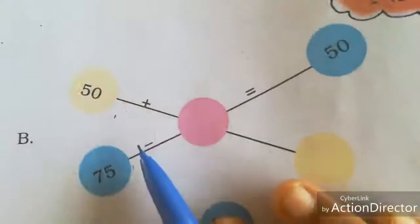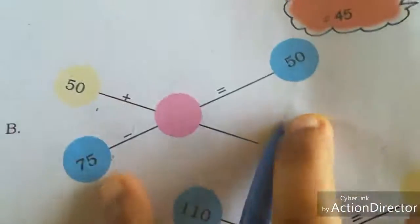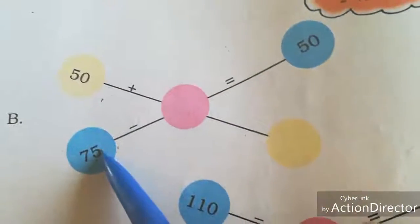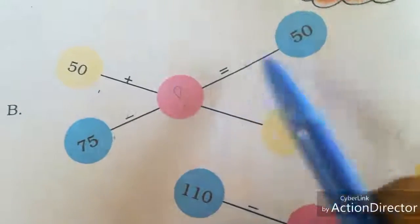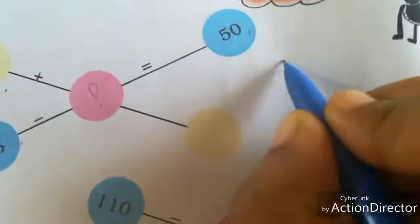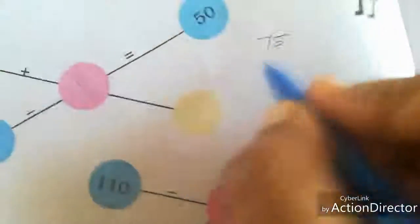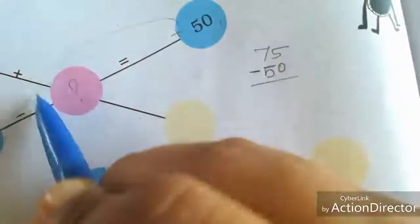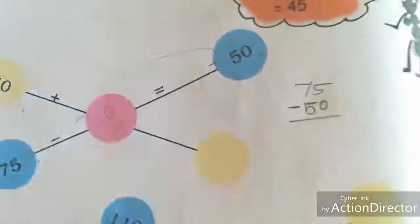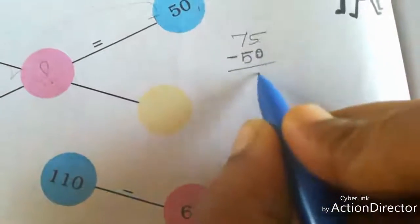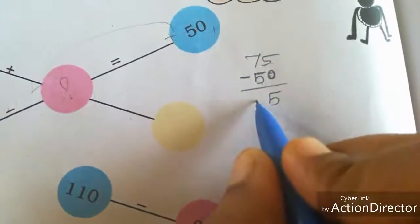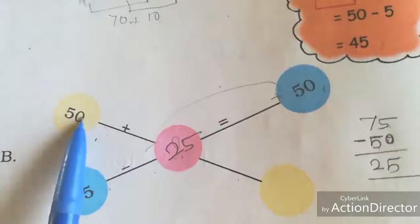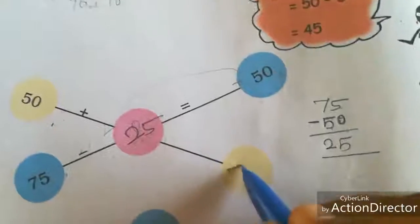Next, first we have to subtract these two numbers to find the middle number. 75 minus some number equals 50. We can directly subtract 75 minus 50. The plus sign here becomes minus. 5 minus 0 is 5, and 7 minus 5 is 2. So the answer is 25. If we add 50 plus 25, that is 75.